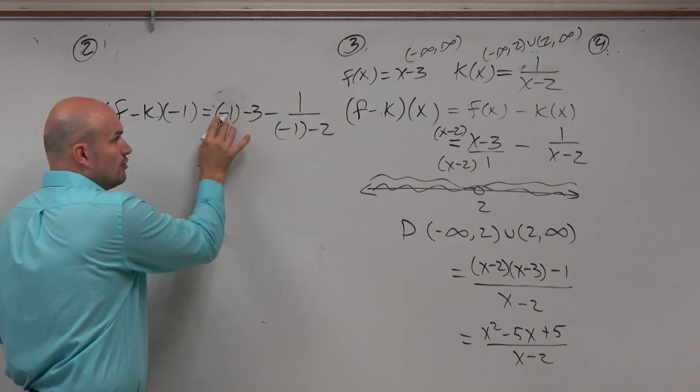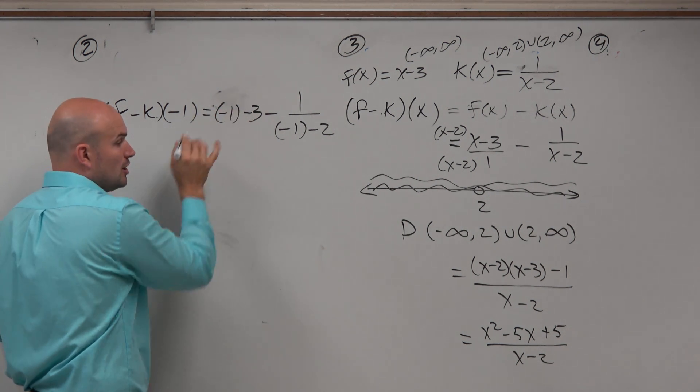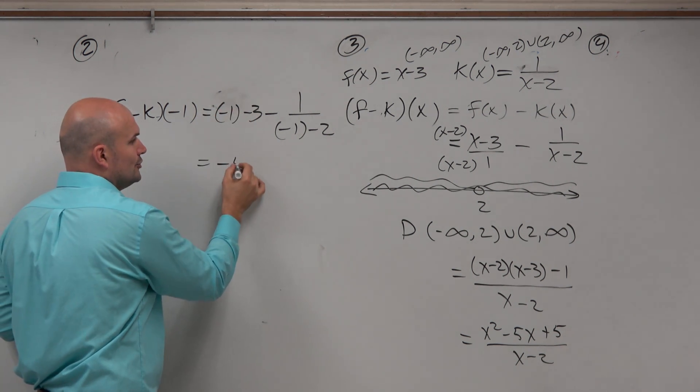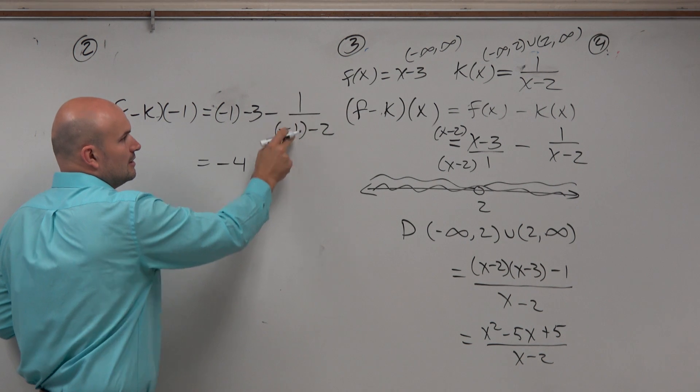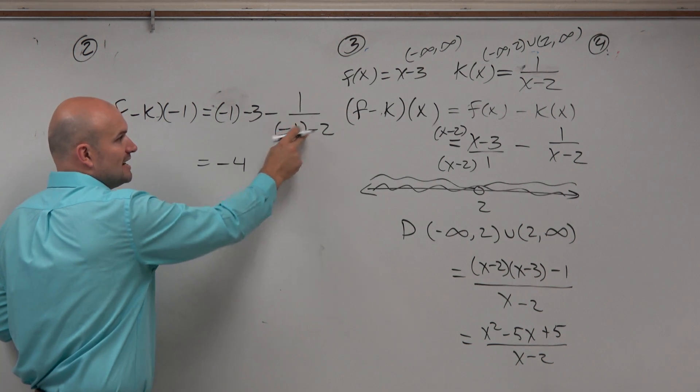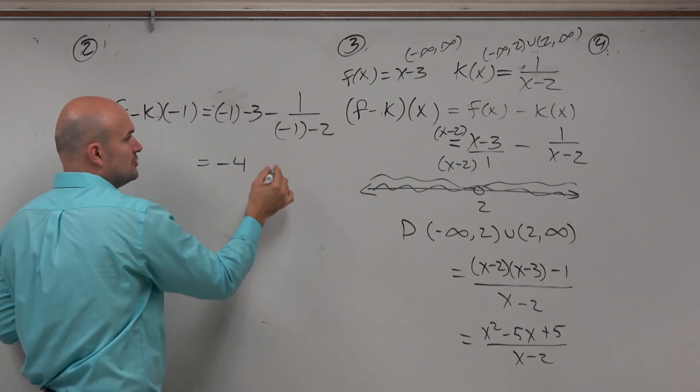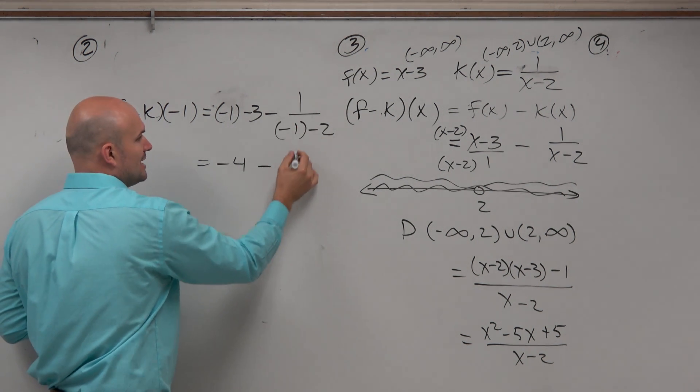Negative 1 minus 3 — you owe me $1, you borrow 3 more, you owe me $4. You owe me $1, you borrow $2, you owe me $3.